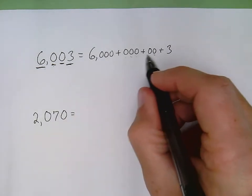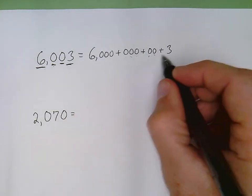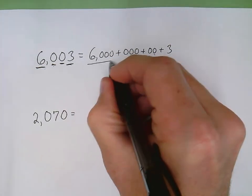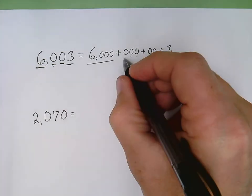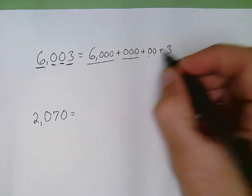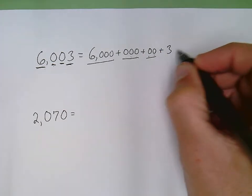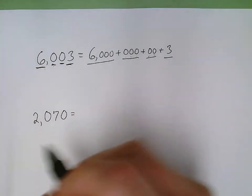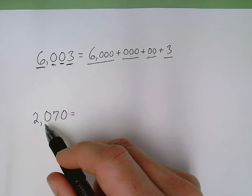By keeping those zeros in there, I keep my pattern: four digits, three digits, two digits, and one digit.